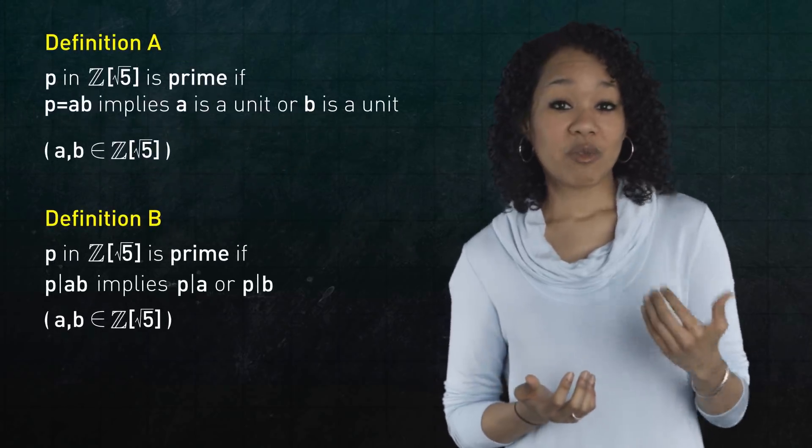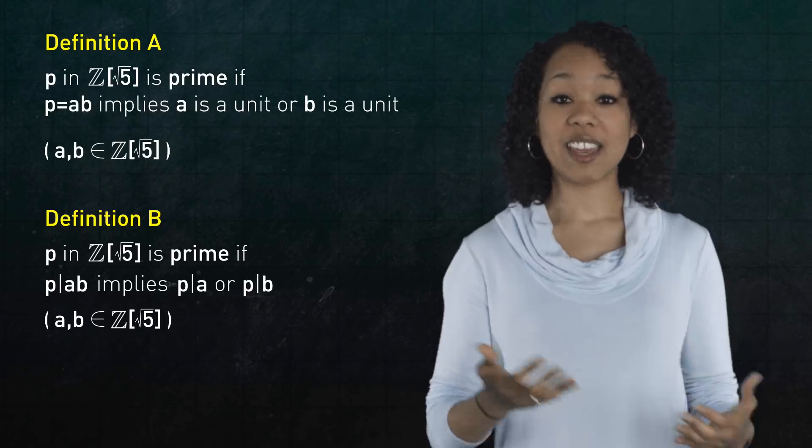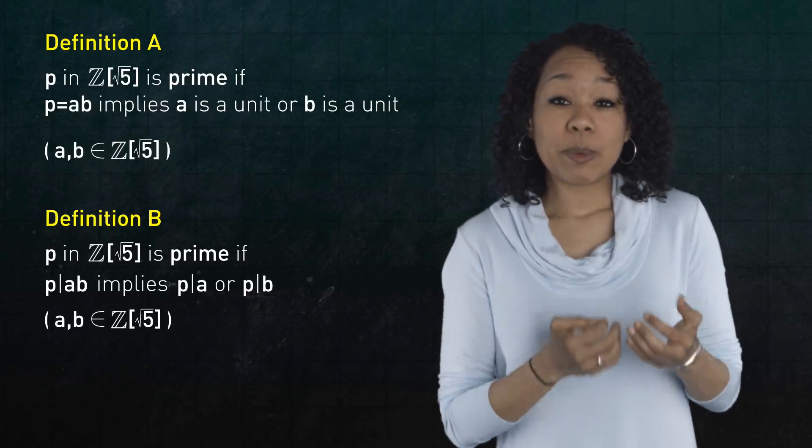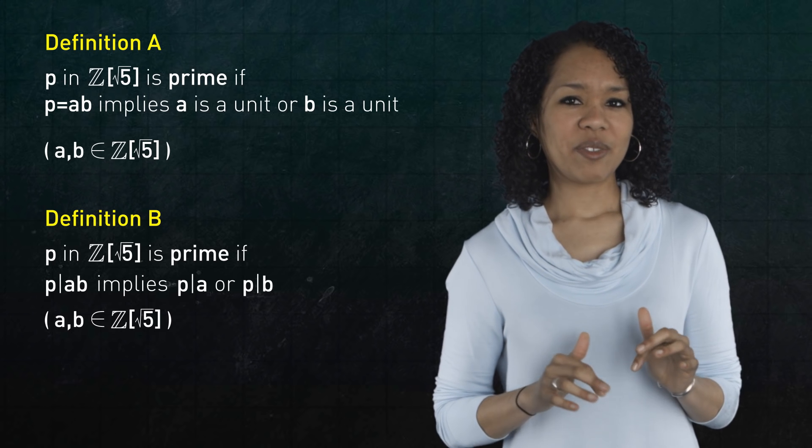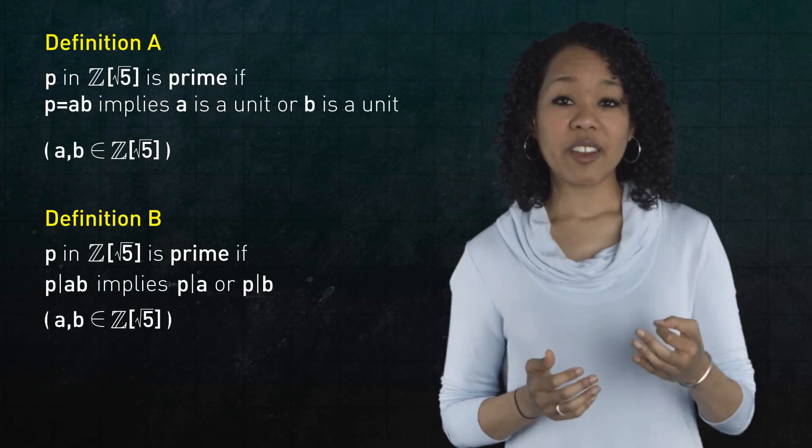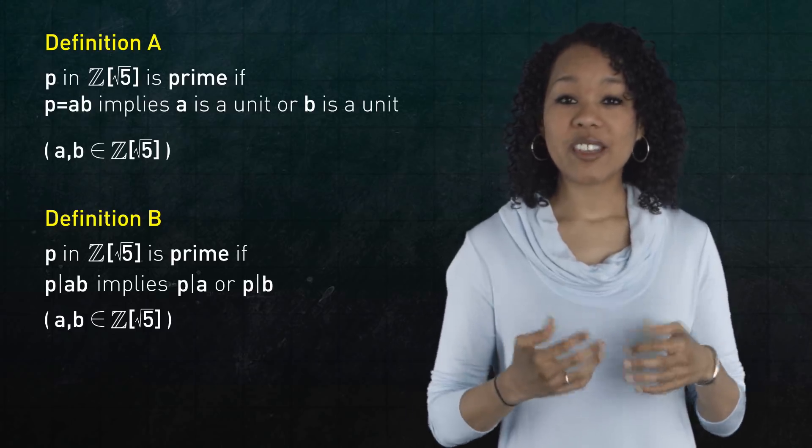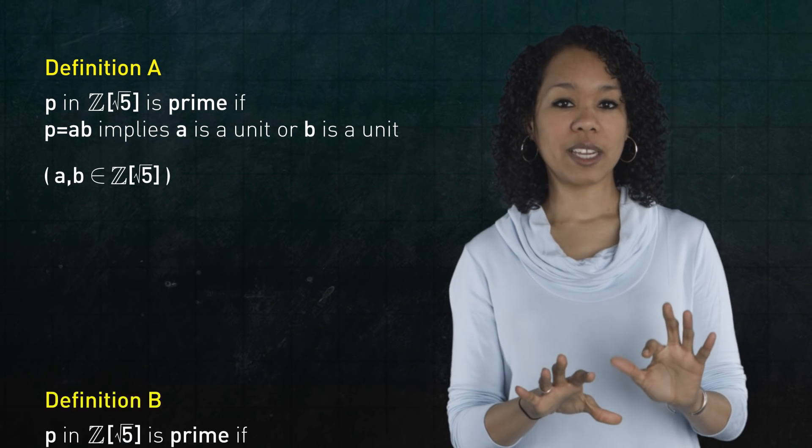Moreover, Z adjoined root 5 also has prime numbers given by definitions a and b. But because we replace the integers with Z adjoined root 5, we need to modify definition a a little. The reason is that Z adjoined root 5 may contain numbers that behave like the number one, even though they aren't the number one. I'll explain.